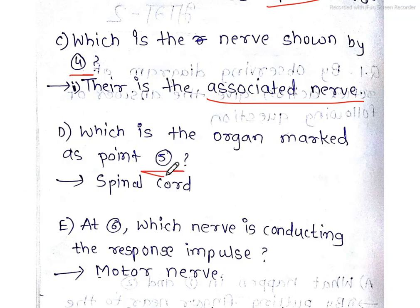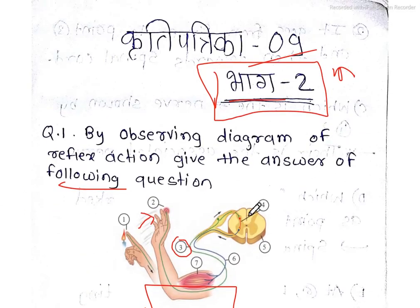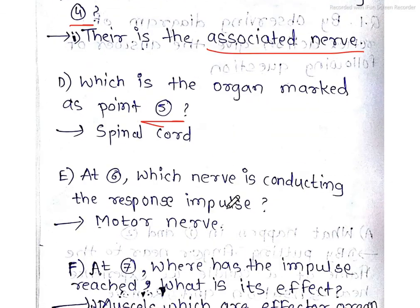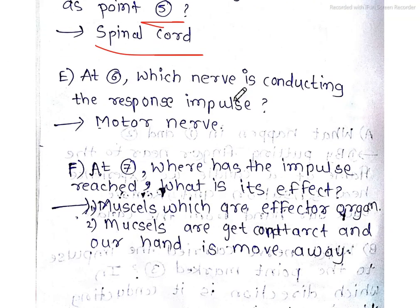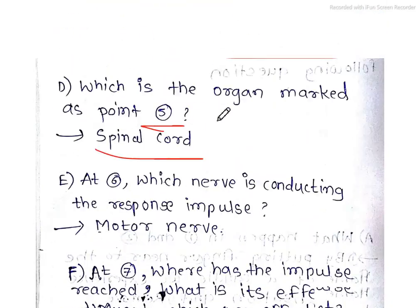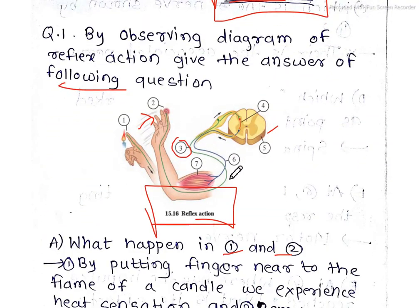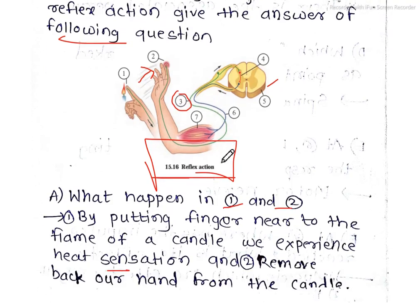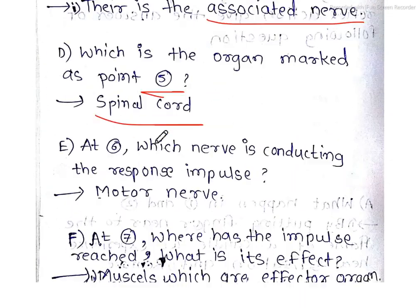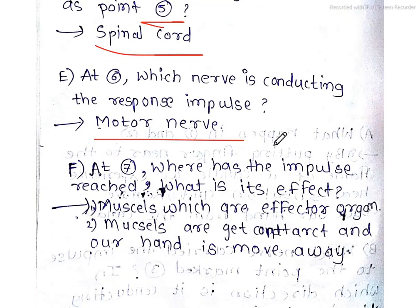Part D: Which is the organ marked by the point 5? Point 5, this is the spinal cord. Part E: At point 6, which nerve is conducting the response impulse? At position 6, this is the spinal cord, then we have the blue nerve. This is the motor nerve.